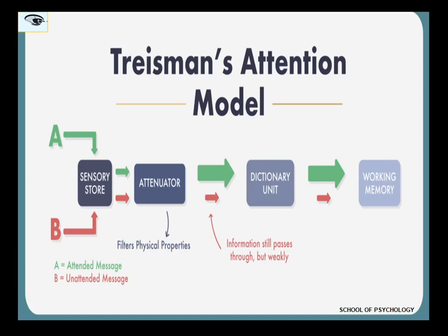Hello everyone. Today we will be touching upon the remaining theories of selective attention. The first theory is the filter attenuation theory, which was developed by Treisman in the year 1962.